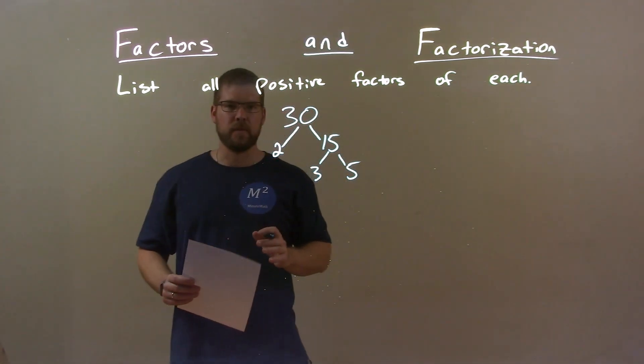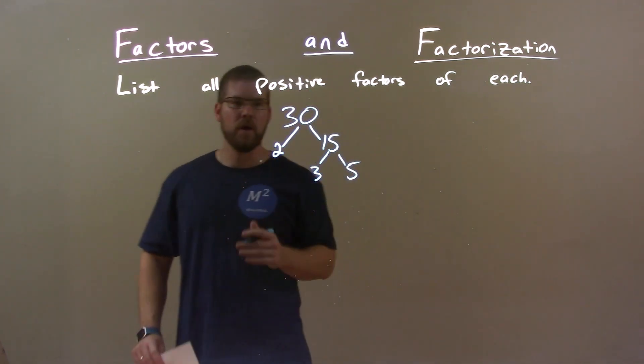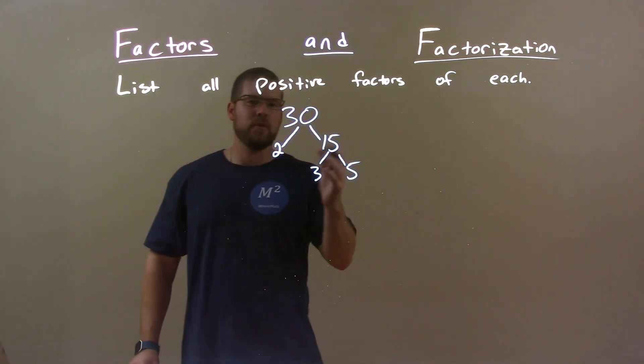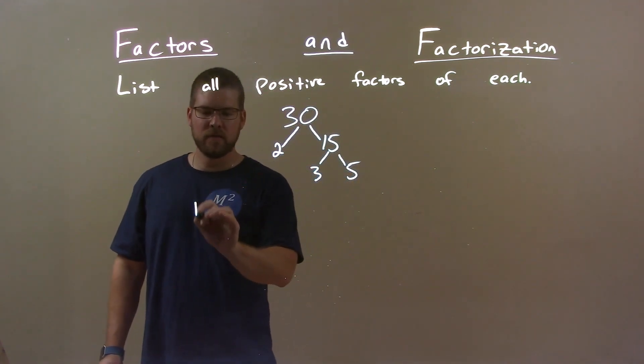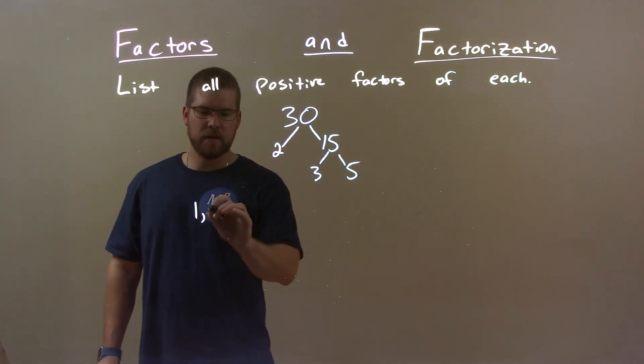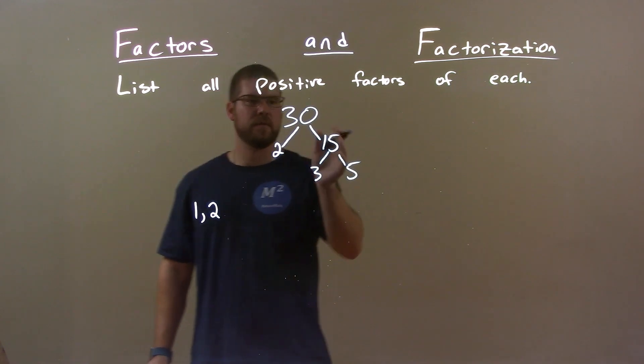But we're not really done here. We have to list all the numbers. So we have to list all of them up to 30 that go evenly into 30. Well 1 is always going to go in there. Then 2 goes in because we know 2 times 15 is 30.